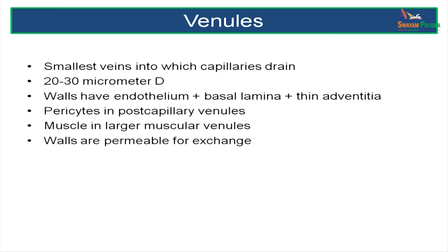Venules are smaller-sized veins with a diameter of about 20 to 30 micrometers. The walls have an endothelium, a basal lamina, and a very thin adventitia. Pericytes may be present in post-capillary venules, whereas muscle cells will be present in larger muscular venules. The walls of a venule are permeable to exchanges taking place.